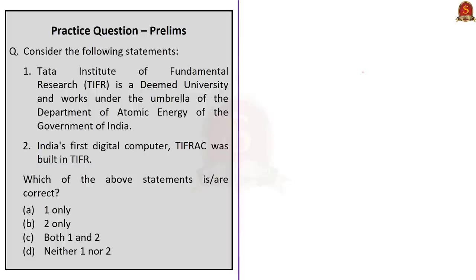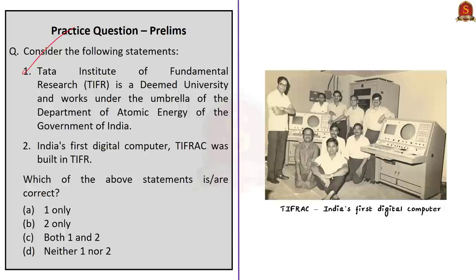Question 3: Consider the following statements. Statement 1: Tata Institute of Fundamental Research (TIFR) is a deemed university and works under the umbrella of the Department of Atomic Energy of the Government of India. Statement 2: India's first digital computer, TIFRAC, was built in TIFR. Which of the above statements are correct? A) One only, B) Two only, C) Both one and two, D) Neither one nor two. Both statements are correct — TIFR is an autonomous institution under the Department of Atomic Energy, and TIFRAC, India's first digital computer, was indeed built by TIFR. The answer is C — both one and two.